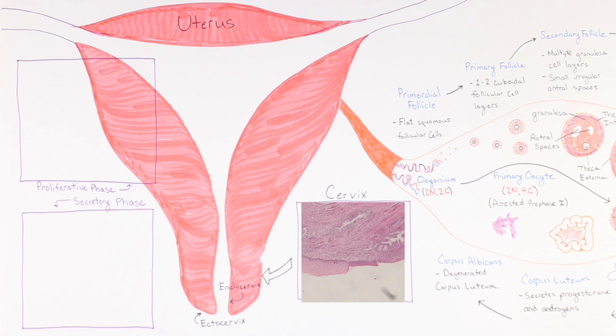The endocervix contains a simple columnar glandular epithelium which can be seen on the right and the ectocervix contains a stratified squamous epithelium shown on the left.